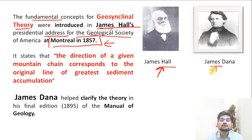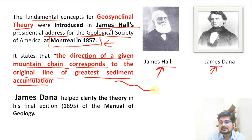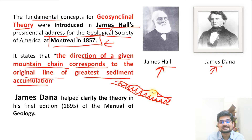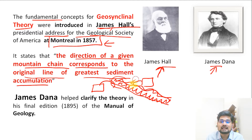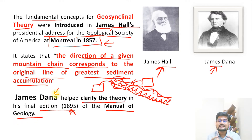Hall and Dana's concept is considered the foundation of geosynclinal theory. Hall stated that the direction of a given mountain chain corresponds to the original line of greatest sediment accumulation — meaning that where we see a mountain chain today, there was originally a water body receiving sediments from surrounding lands. James Dana helped clarify this theory in his final edition of his 'Manual of Geology' in 1895, after almost 40 years of work. In 1921, Leopold Kober built further details on this foundation.